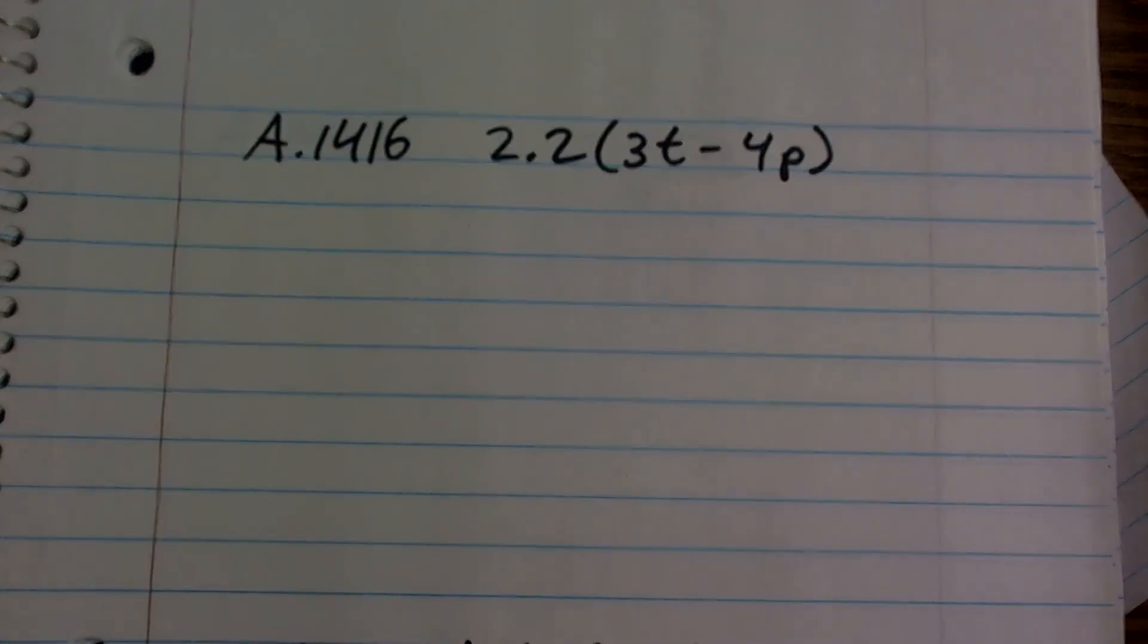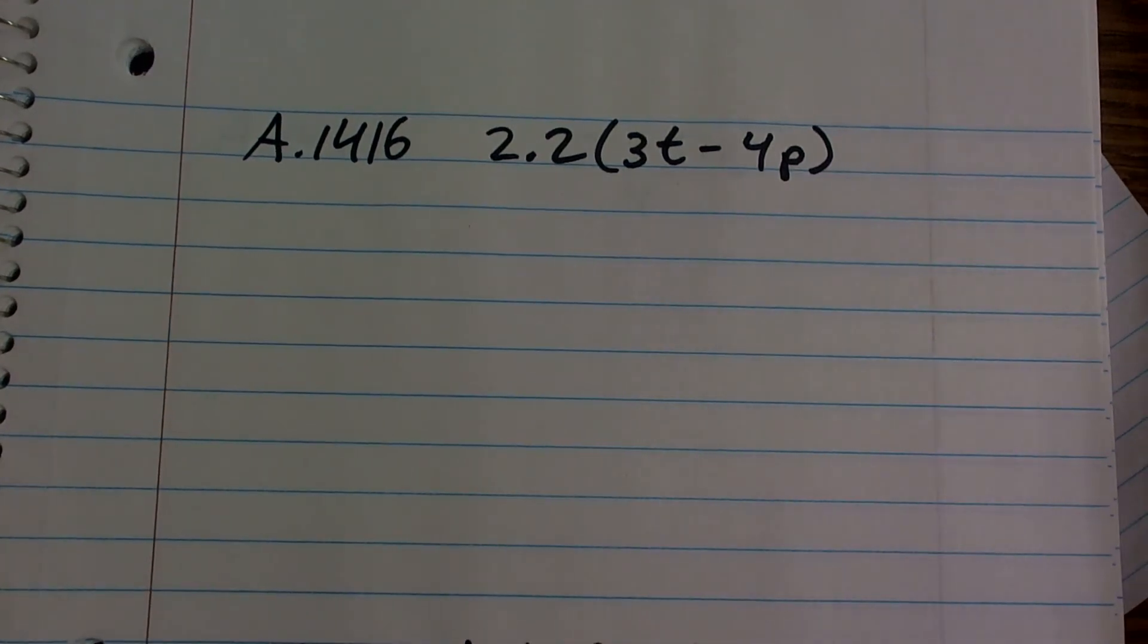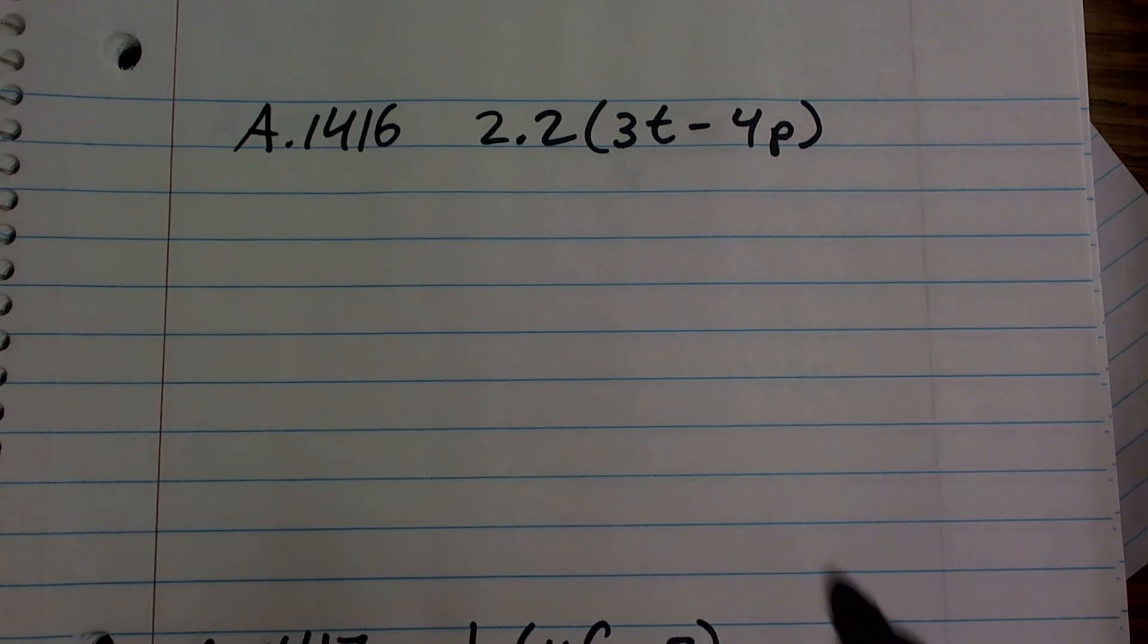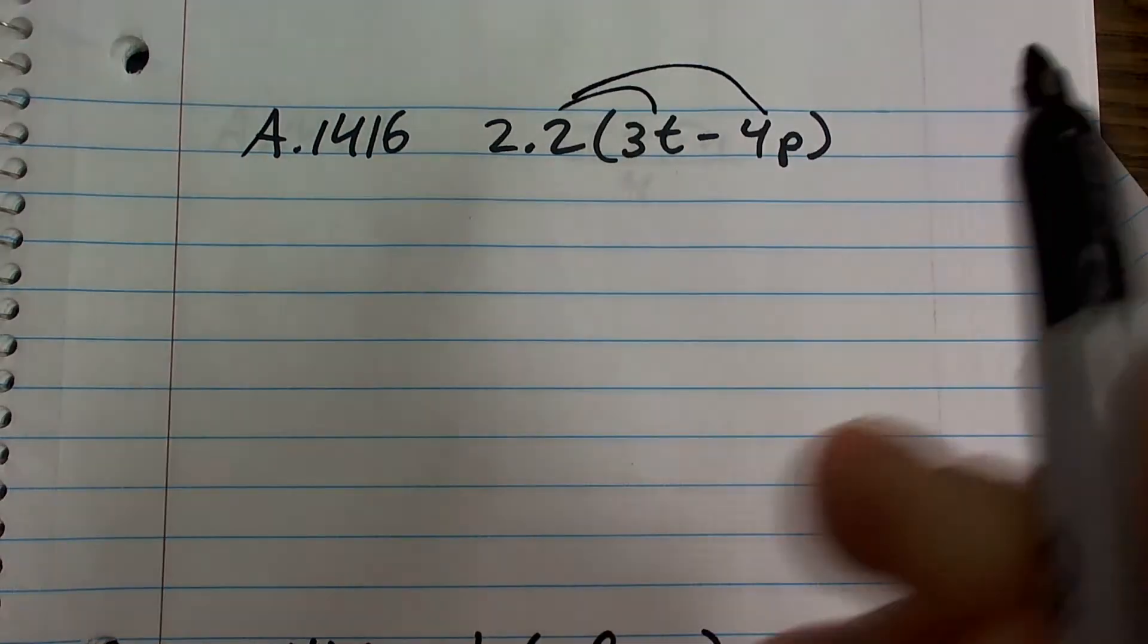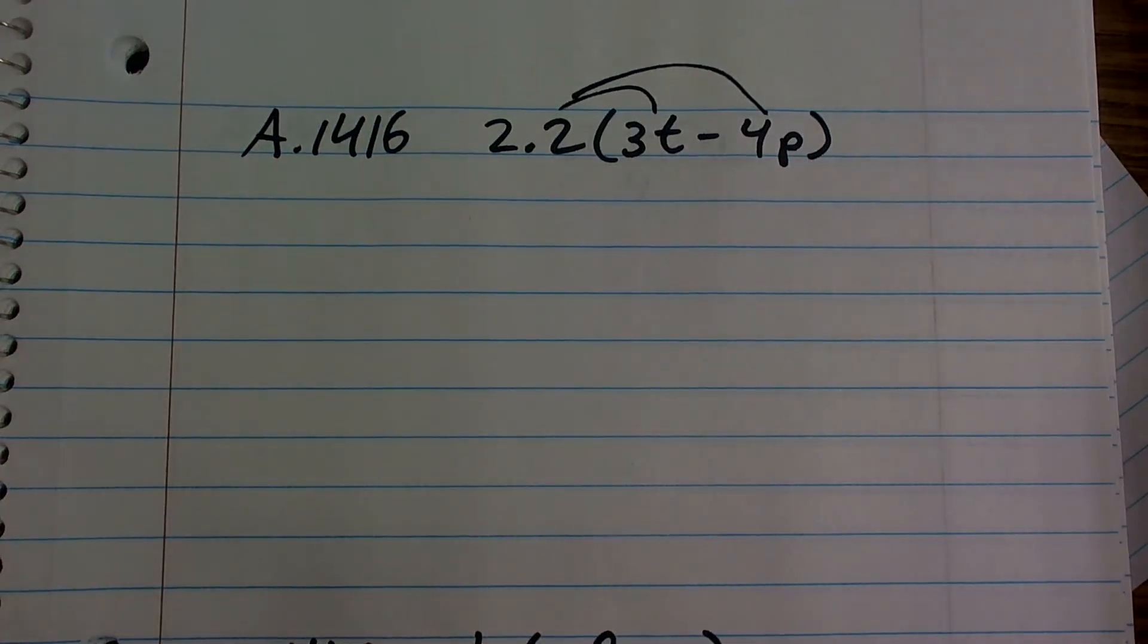All right, so I decided if I'm going to do one with fractions, let's just do one with decimals. So it's going to be very basic. I'm going to kind of run through this. Distributive property - we know that 2.2 is being multiplied by 3t, and 2.2 is being multiplied by negative 4p.